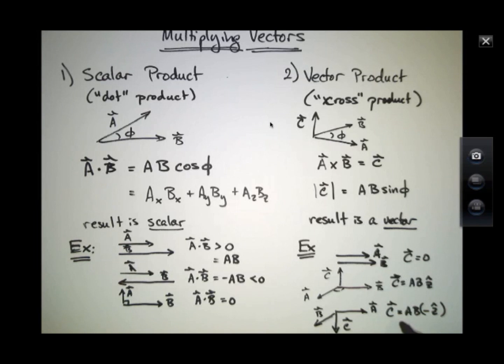And the vector C in this case would be negative 1 times the vector C in this case. There it would be straight down the minus Z direction. It would still have the same magnitude, just pointing in the opposite direction.